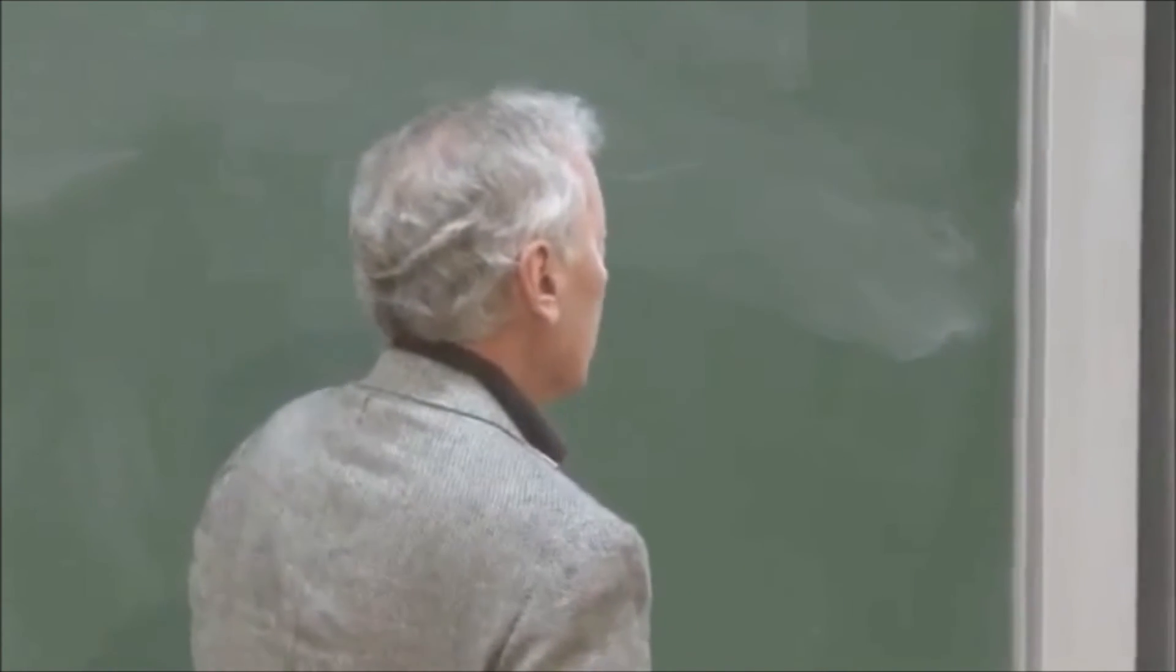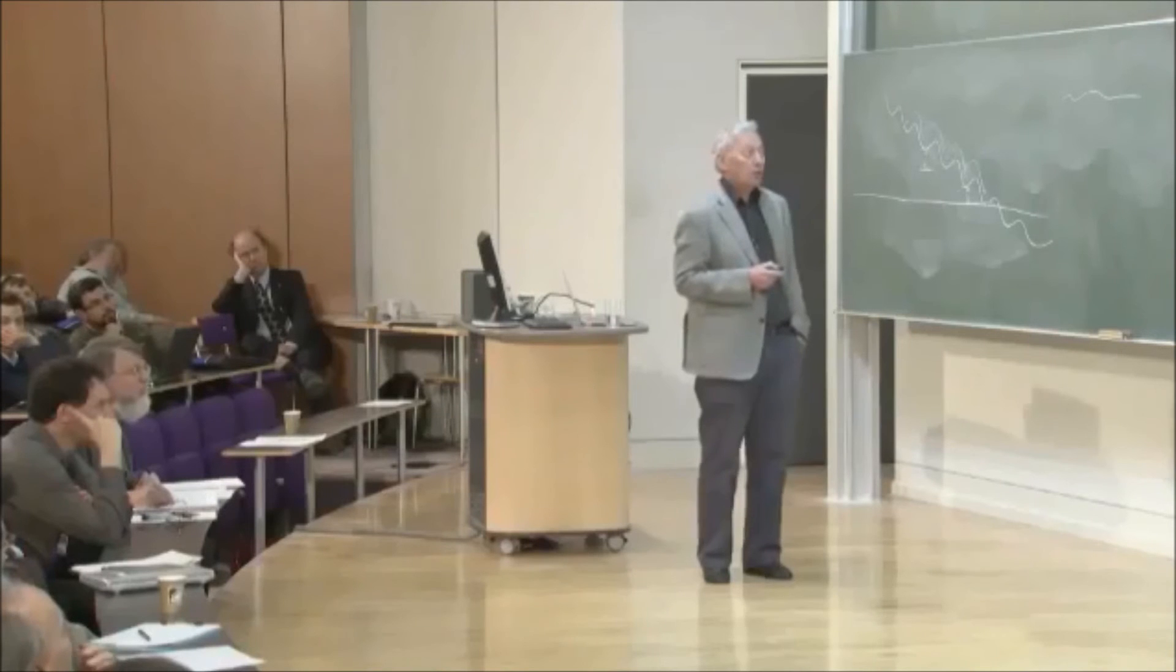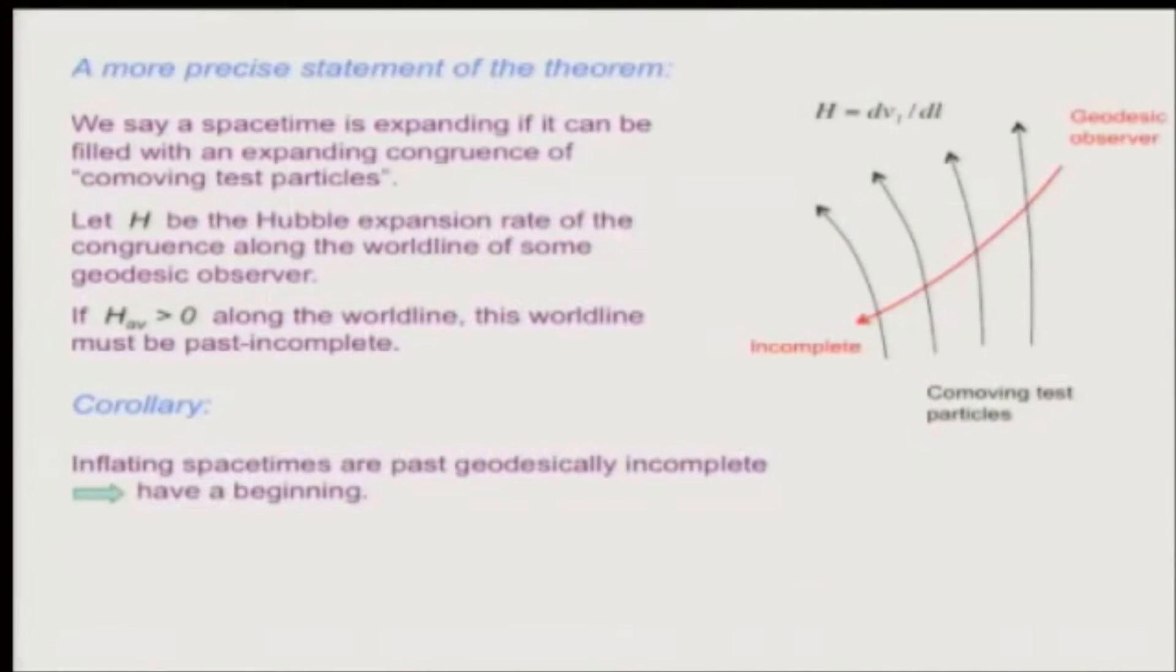No, H can be negative or positive. All we require is that H averaged over—Yeah, what I'm asking is whether H averaged has to be bounded from below by a positive number, or is it okay for it to slowly approach zero as you go backwards? Well, if it slowly approaches zero, then the average will be zero, right?